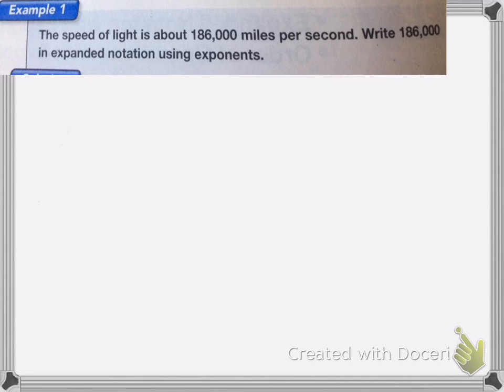Here we have the speed of light is about 186,000 miles per second, and it wants me to write that in expanded notation using exponents. So the way I do that is I have 186,000. Now, if you remember, with expanded notation, we go by the place value.